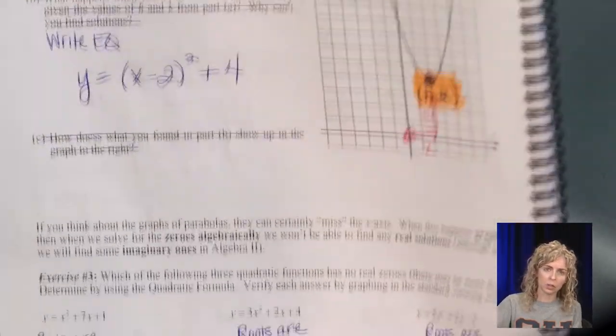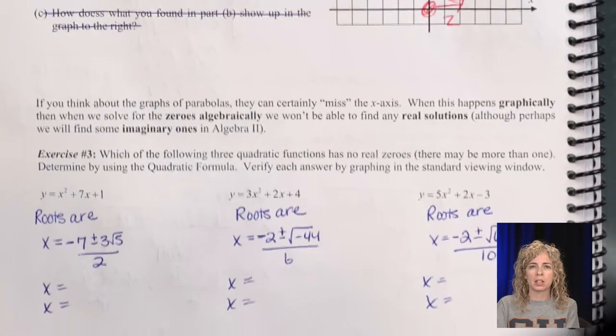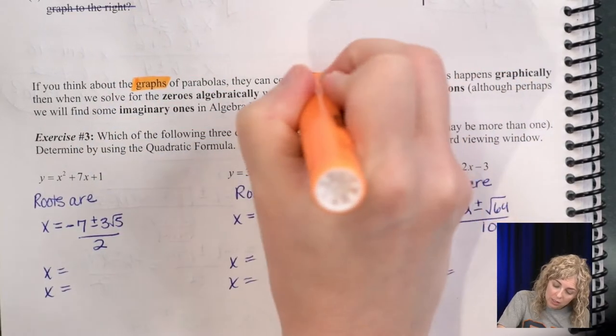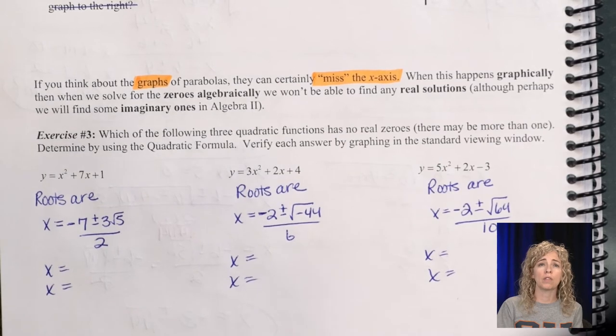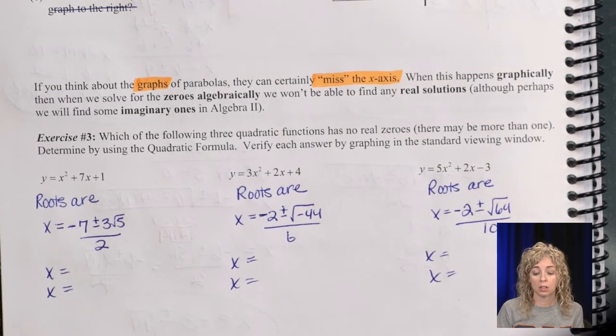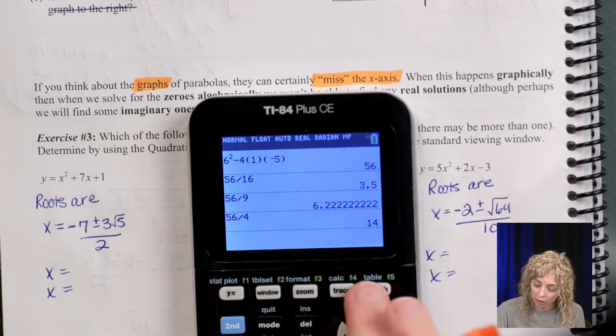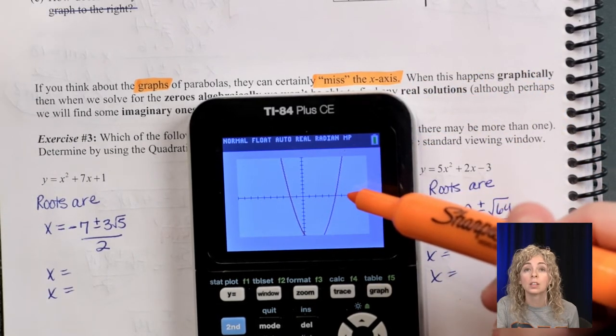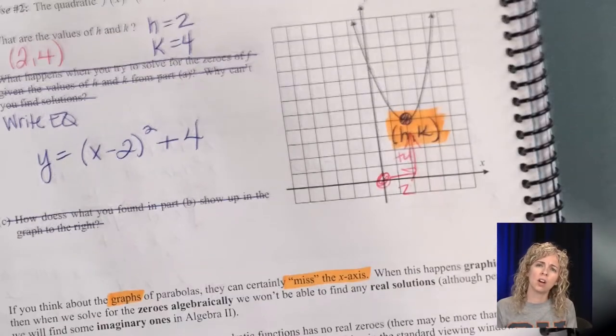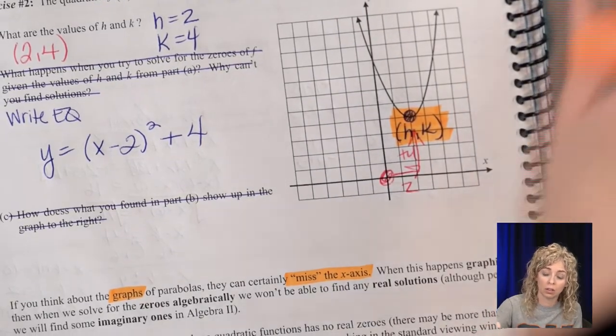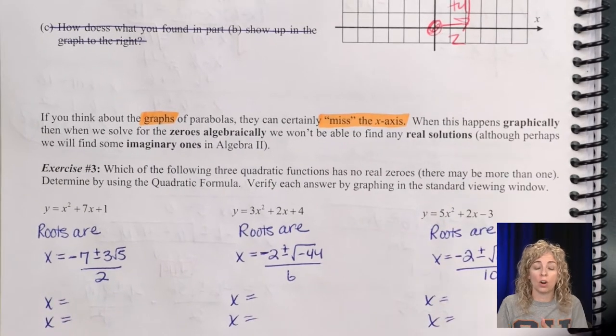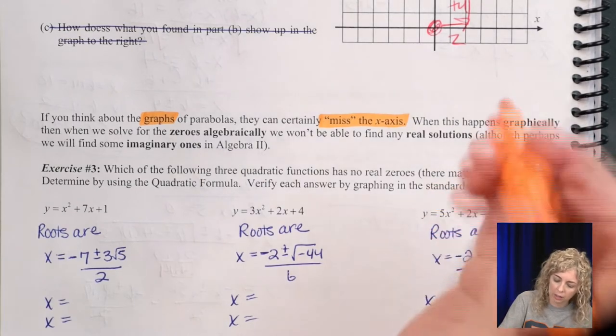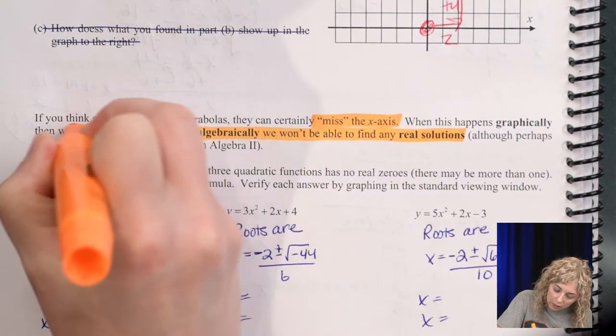Alright, lastly, and this will be quick. If you think of the graphs of parabolas, they can certainly miss the x-axis. So if the graph misses the x-axis, when this happens graphically, then we will solve for the zeros algebraically. So when we can't see where it crosses, if I still have that one in my calculator, we can see it crosses here at negative 2 and I think it was 5, then those are the solutions. But if we can't see where it crosses, we can't just look at a graph, we have to do it by hand.